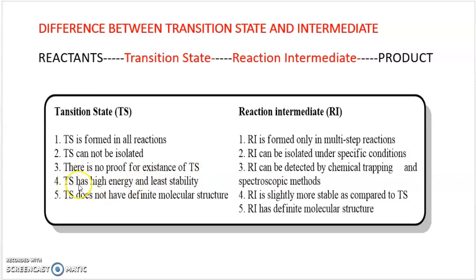Another point: the transition state has very high energy, and any species with high energy is less stable. Reaction intermediates are slightly more stable because they have less energy. A very important point of difference is that the transition state does not have a definite molecular structure or shape, whereas the reaction intermediate has a definite molecular structure and a specific shape.